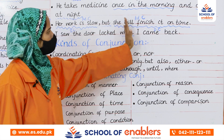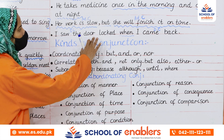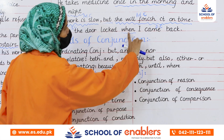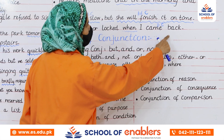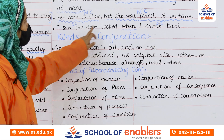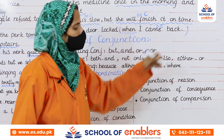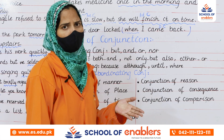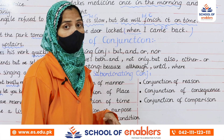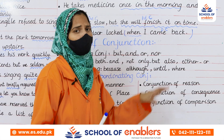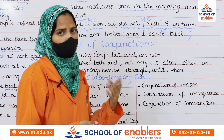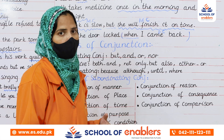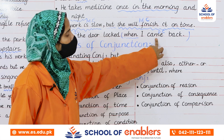Look at the next sentence: 'I saw the door locked when I came back.' The part 'I saw the door locked' makes sense on its own. The word 'when' is the conjunction connecting it to 'when I came back.' But 'when I came back' on its own does not make complete sense — information is incomplete; you need more information to understand what happened.